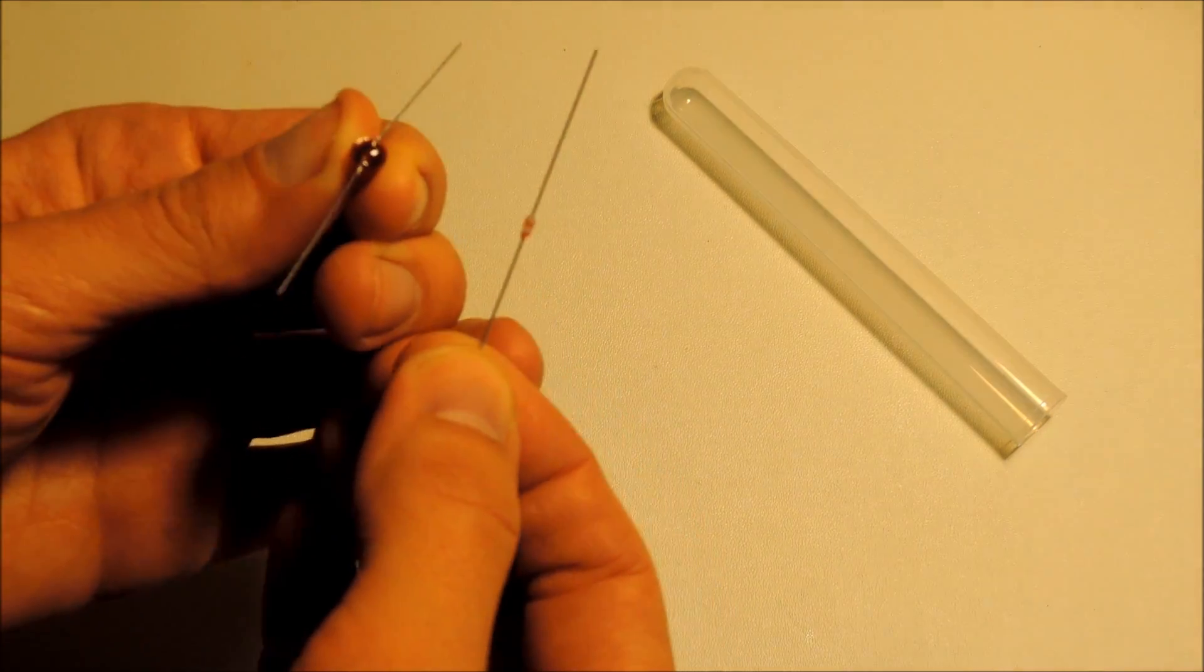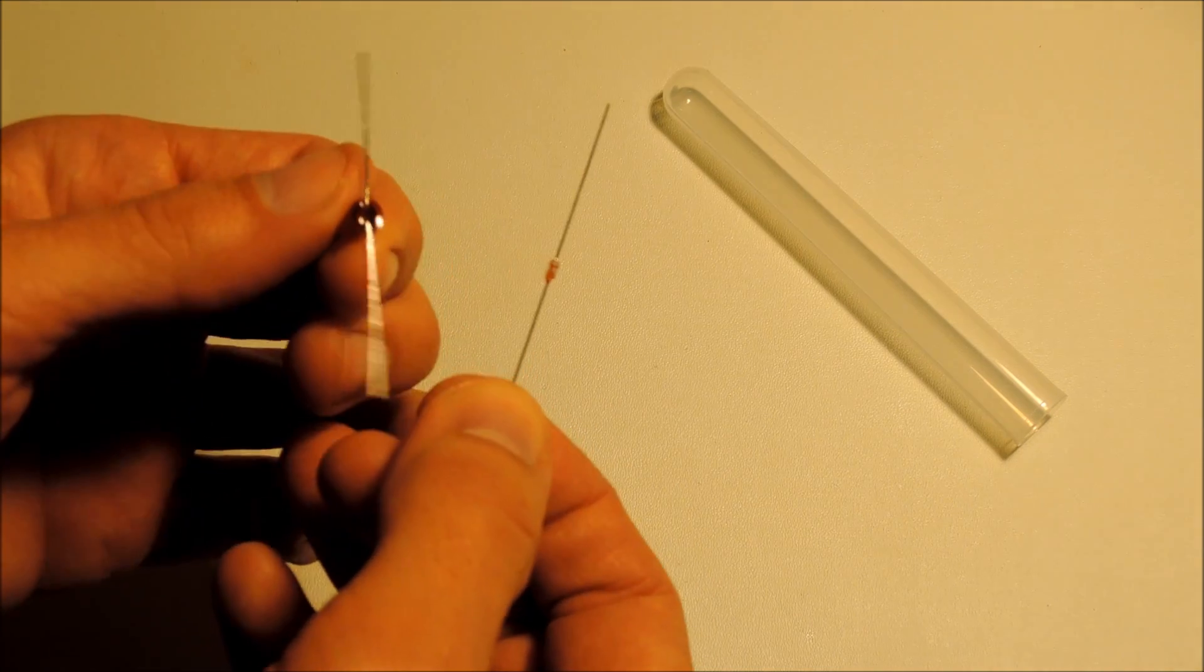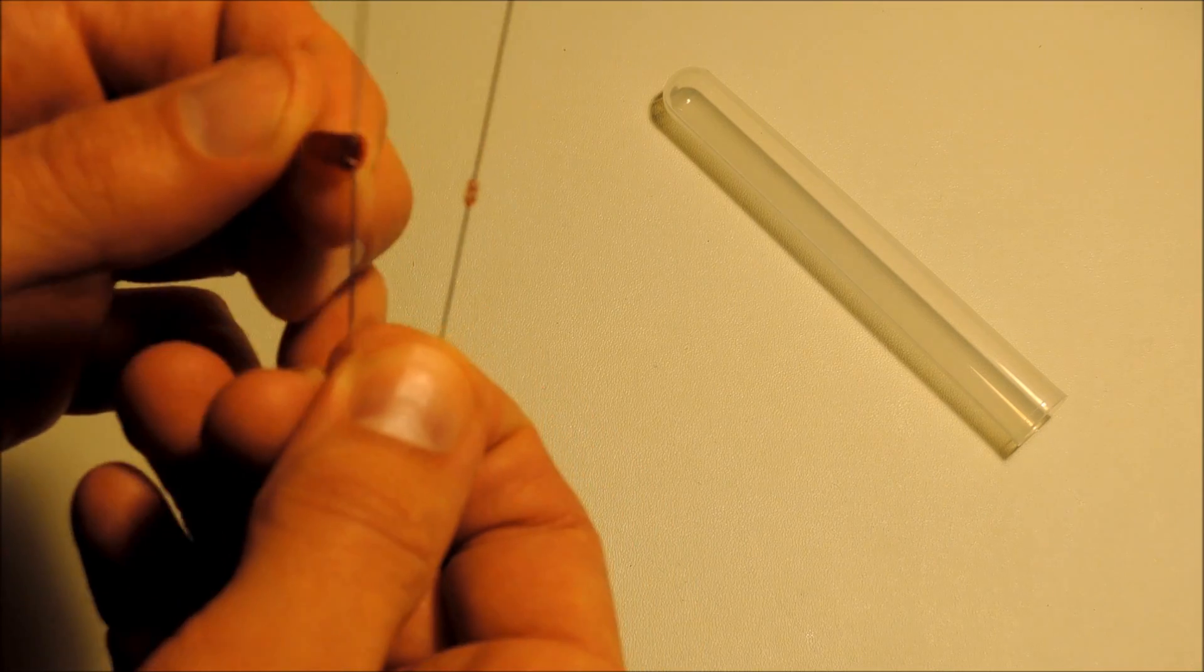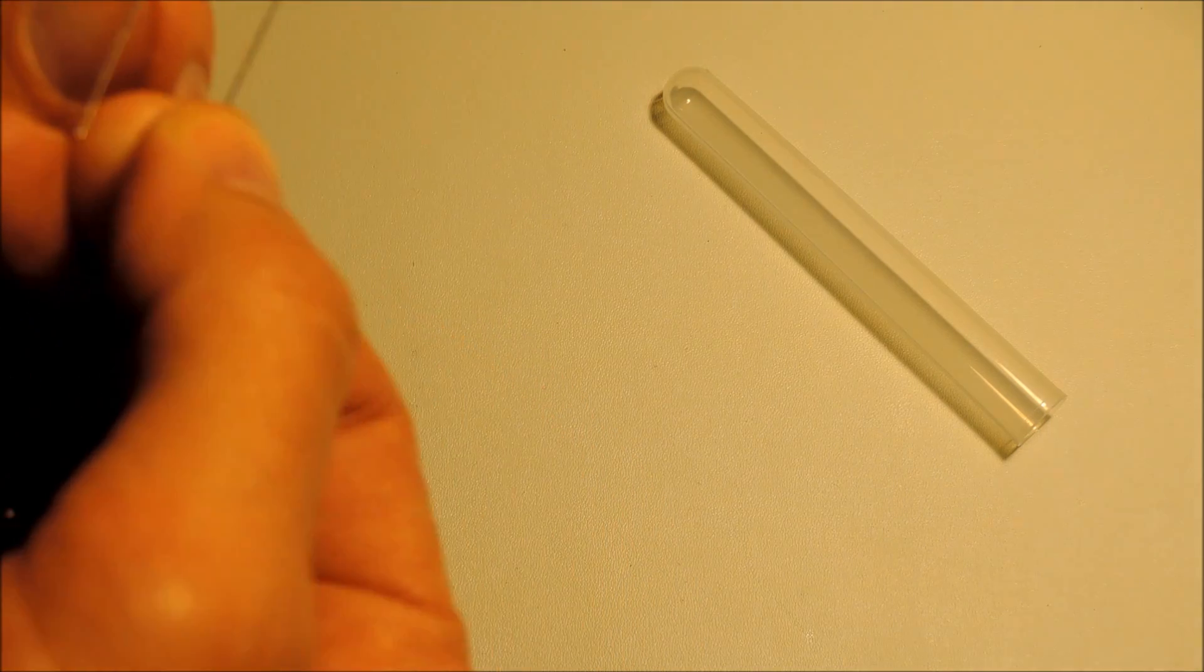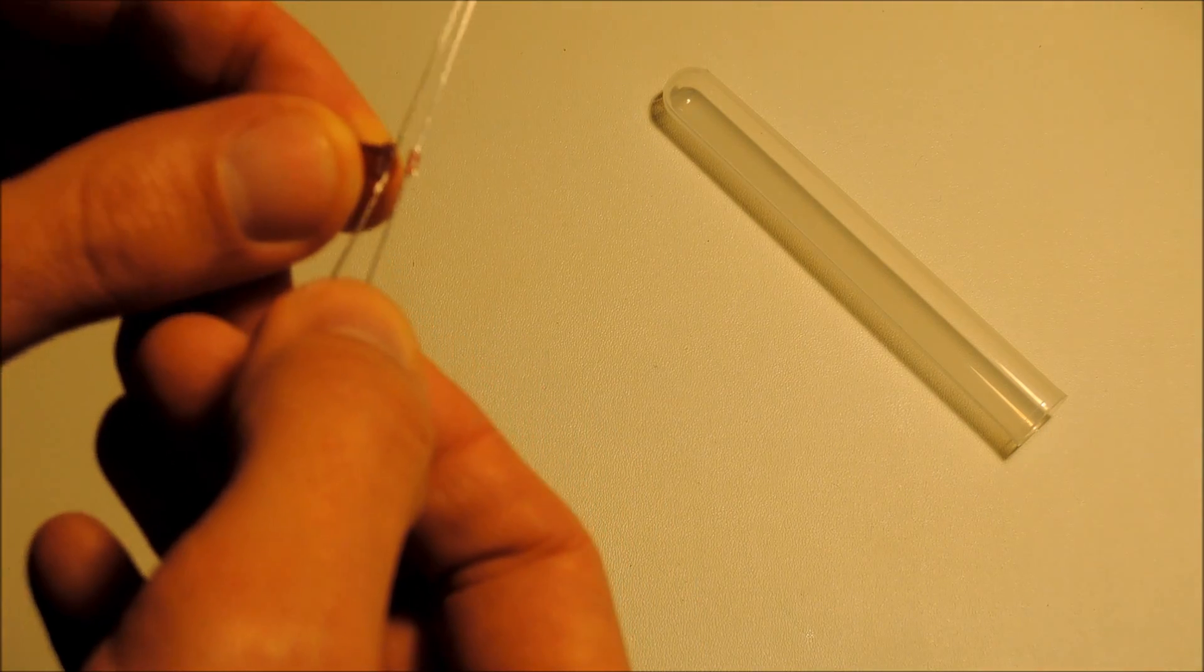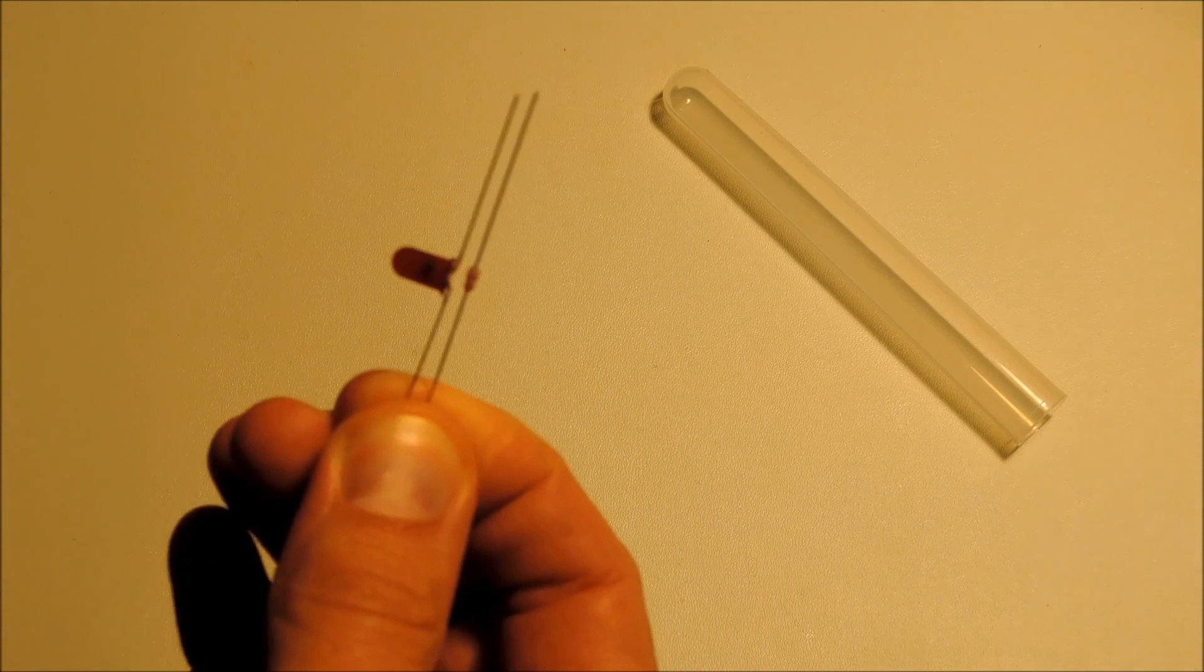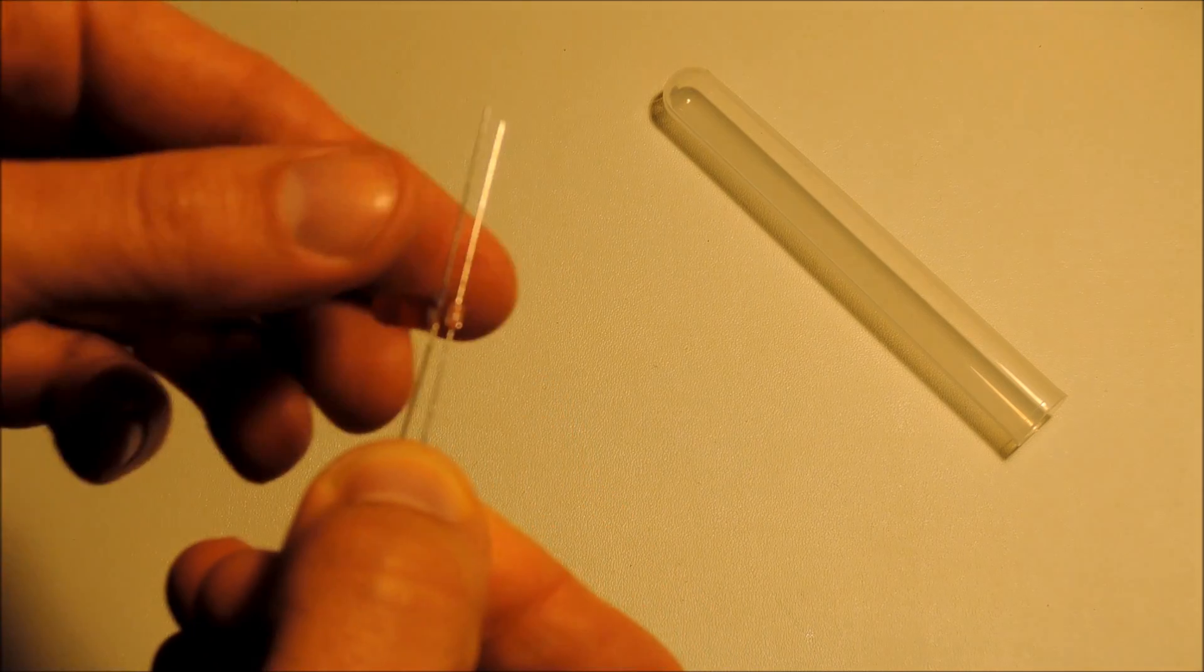And what you're going to do is you're going to look and make sure that you're mounting it anode to cathode and cathode to anode, so the flat part of the LED should go opposite the lines on the diode. So if you line it up like that, you can see the flat part on the LED and the lines on the diode.